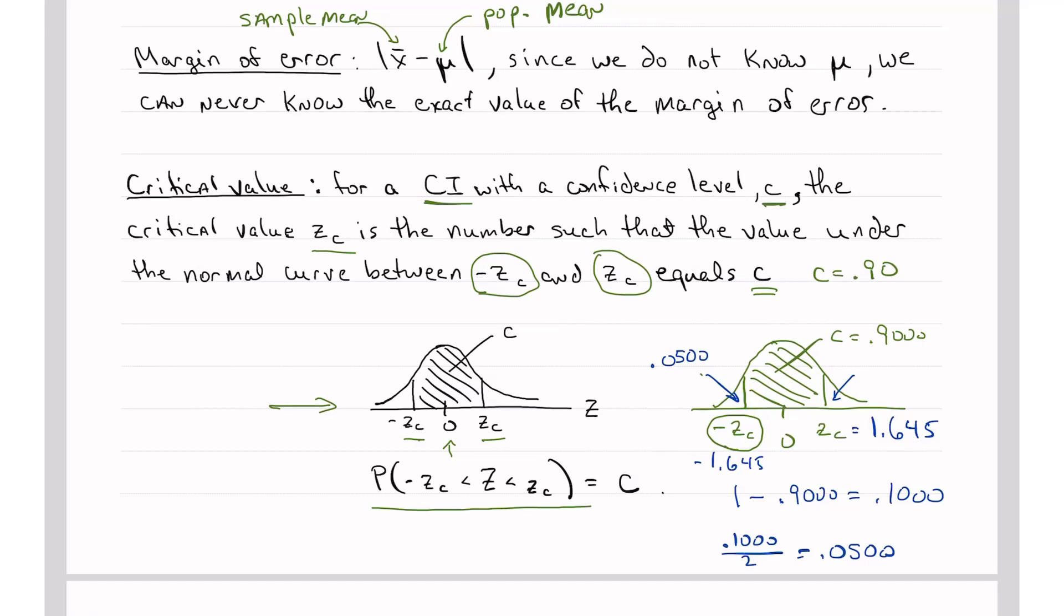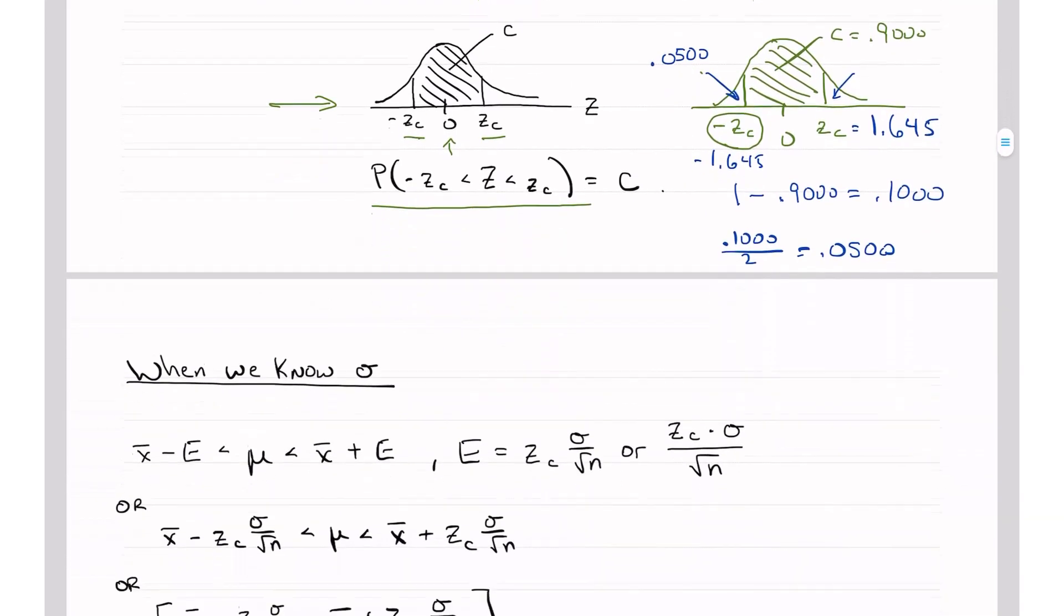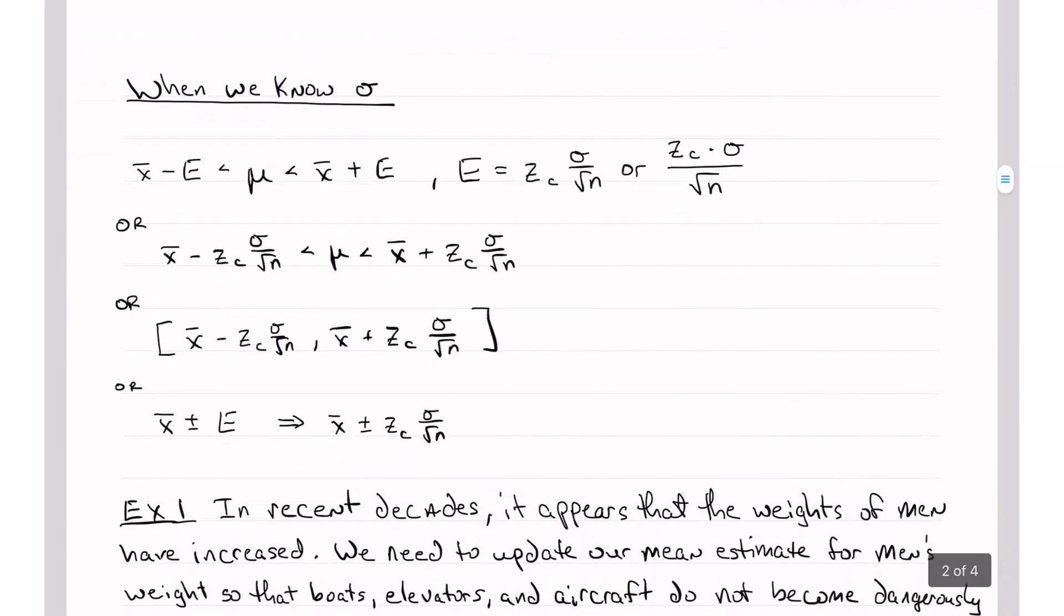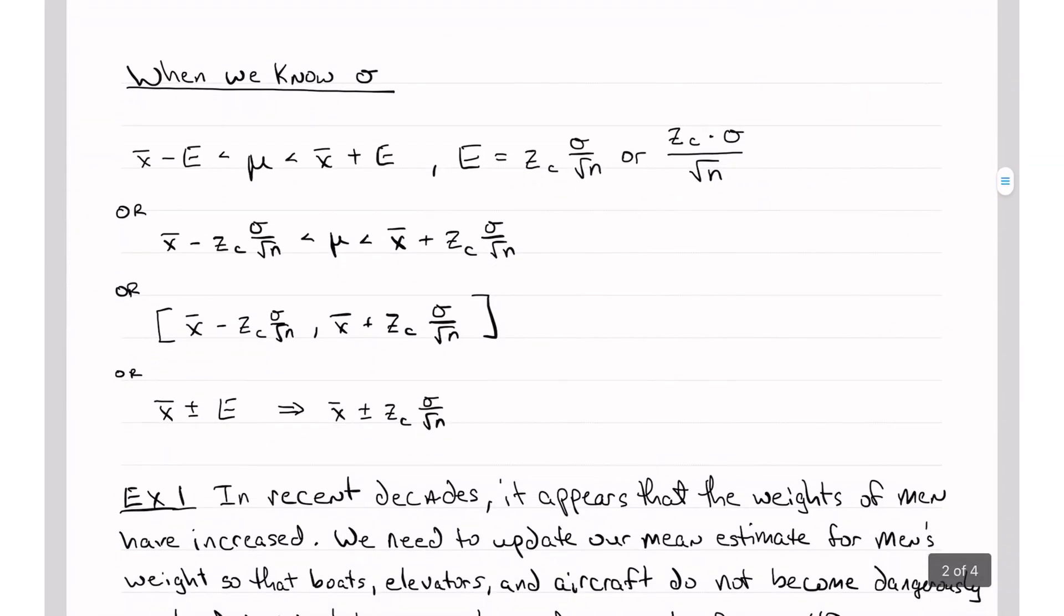So that's how we find a critical value. This is really important, so I hope you'll review that and make sure that you understand it. So again, this procedure is when we know sigma, the population standard deviation. Or of course, if I know sigma squared, then I also know sigma. Just take the square root.